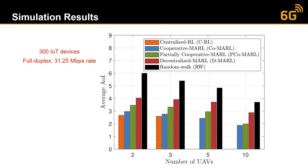In a scenario with 300 IoT sensors using full duplex at 31.25 megabytes rate, as we increase the number of UAVs the average age of information decreases, with the cooperative scheme consistently outperforming the others.